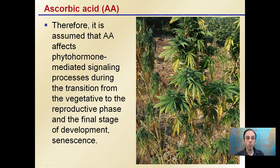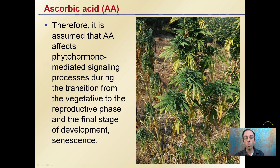It's assumed that ascorbic acid affects phytochrome-mediated signaling, which is processed during the transition from the vegetative to the reproductive phase in the final stage of development, and ultimately senescence. So when your plants are flipping from a vegetative to a flowering stage, ascorbic acid could be occurring in higher amounts and influencing that. This is an example of how a plant hormone, while needed in small amounts, can have large effects on the whole plant's physiology and potentially even its anatomy.